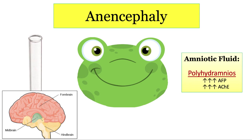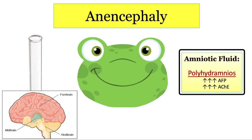If they show you a picture of a fetus, the head will look kind of like a frog because the eyes are disproportionately large, since the rest of the head is missing. The big ticket items for anencephaly are an excess of amniotic fluid, and high amniotic alpha-fetoprotein and acetylcholinesterase.